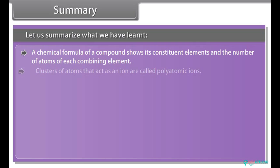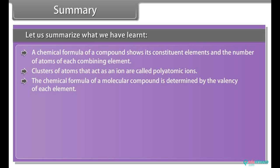Clusters of atoms that act as an ion are called polyatomic ions. The chemical formula of a molecular compound is determined by the valency of each element.